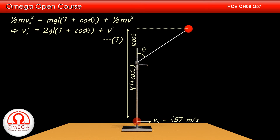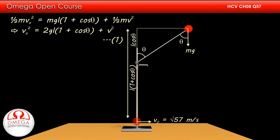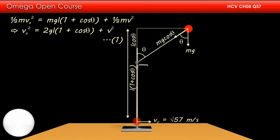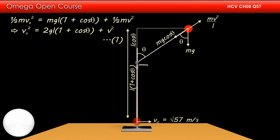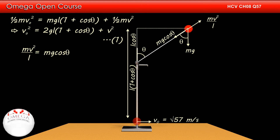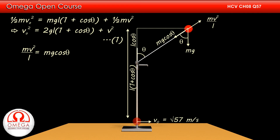Now let us draw the free body diagram of the particle. Gravitational force Mg acts on the particle in the downward direction. As the string makes an angle theta with the vertical, the angle between the gravitational force and the string is also theta. Therefore, the component of gravitational force along the string is Mg cos theta. Centrifugal force MV²/L acts on the particle in the radially outward direction. The string will start becoming slack at the point where the component of gravity along the string just balances the centrifugal force. Therefore, MV²/L = Mg cos theta, or V² = gL cos theta. ... (Equation 2)